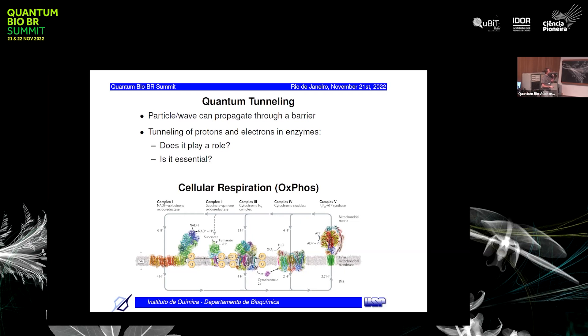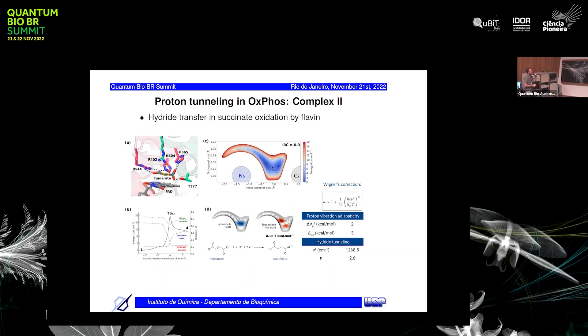At the same time that we have electrons being transferred through this membrane, we have protons being pumped orthogonally from the matrix to the intermembrane space. Then complex five will use this proton gradient to synthesize ATP, and ATP is the energy source in the cell, the energy currency in the cell.